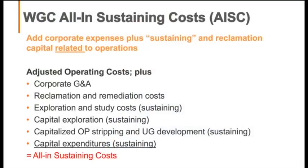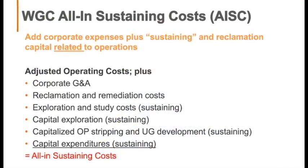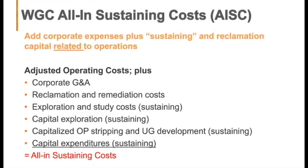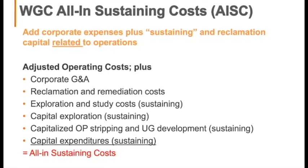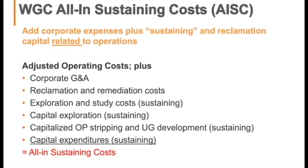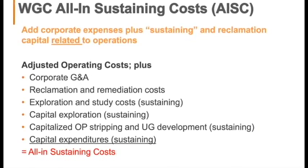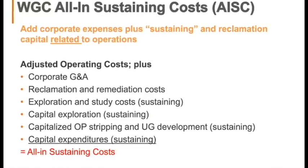The all-in sustaining cost is basically those operating costs with the addition of corporate G&A — the bean counters, lawyers, and CEOs — and reclamation, exploration capital, stripping, and development. That equals your all-in sustaining costs. And these, when it comes to valuations, are related to the operation.